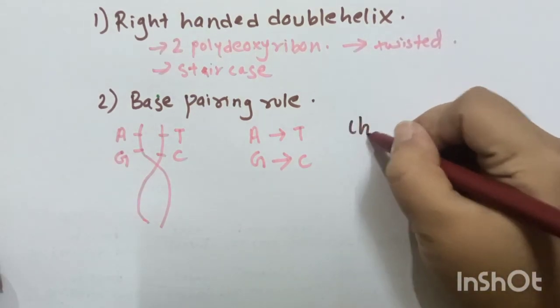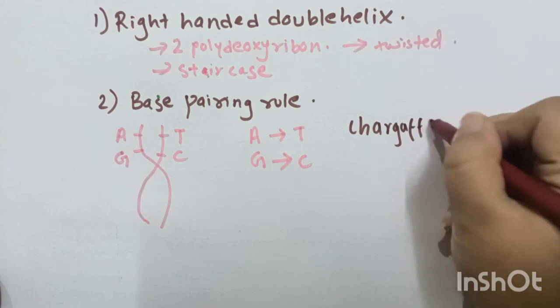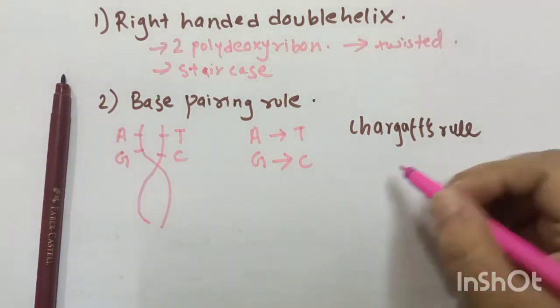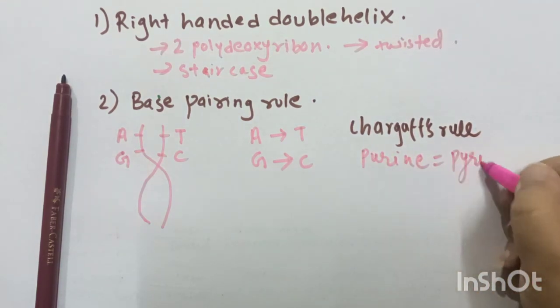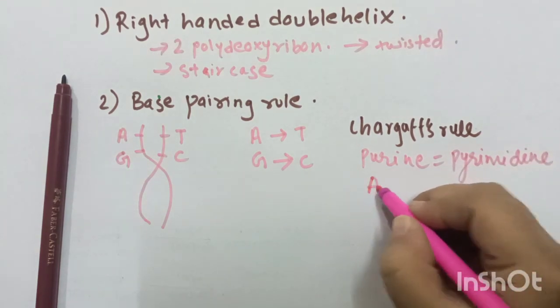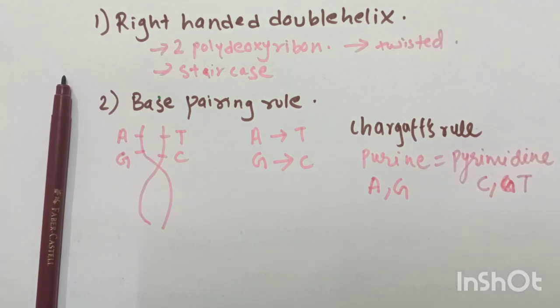There is another rule, Chargaff's rule. The Chargaff's rule says that in a structure of DNA, Purine always equals to Pyrimidine. Purine is A and G, and Pyrimidine is C and T.